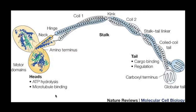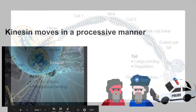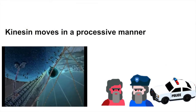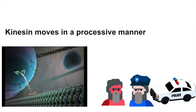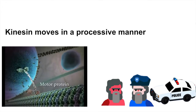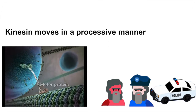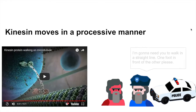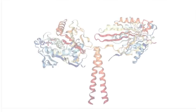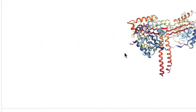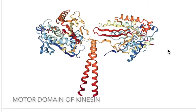The heads hydrolyze ATP and allow kinesin to walk down the microtubule. Kinesin walks down the microtubule in a processive manner, which basically means that it moves its motor domains one in front of the other down the microtubule. As mentioned earlier, the part of kinesin responsible for its movement down a microtubule is the motor domain, or head.